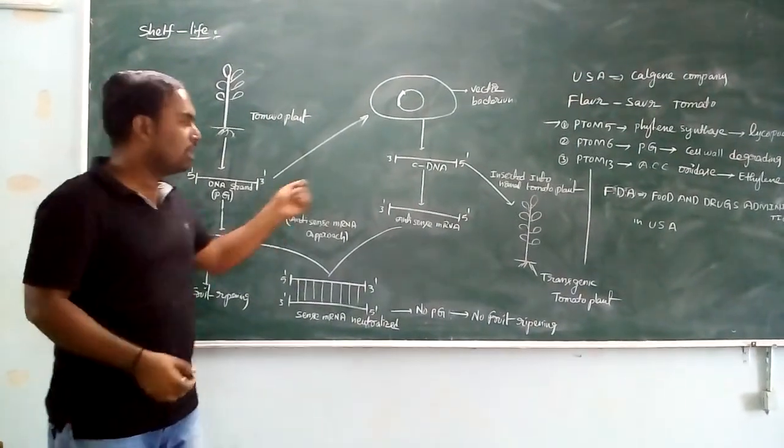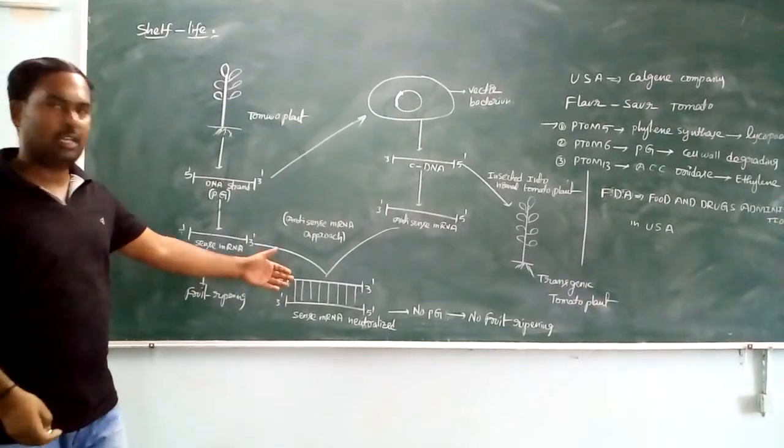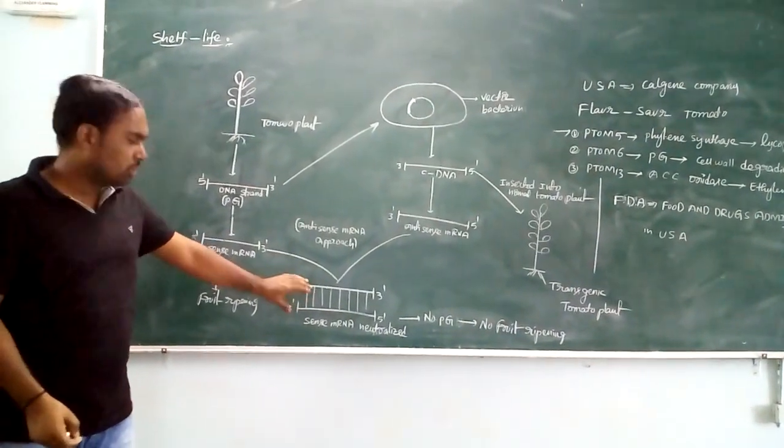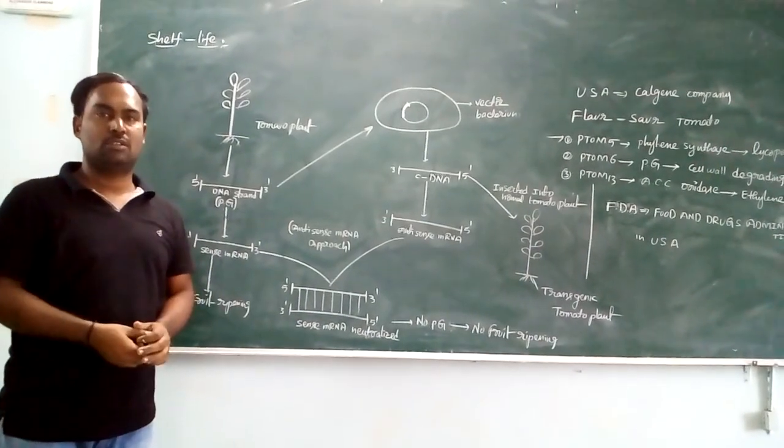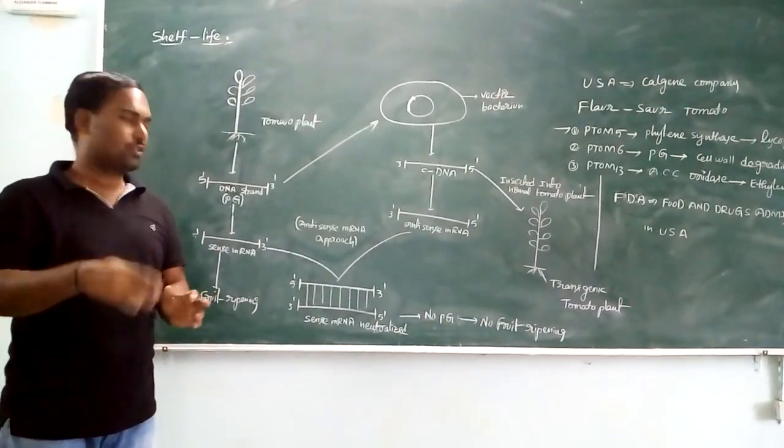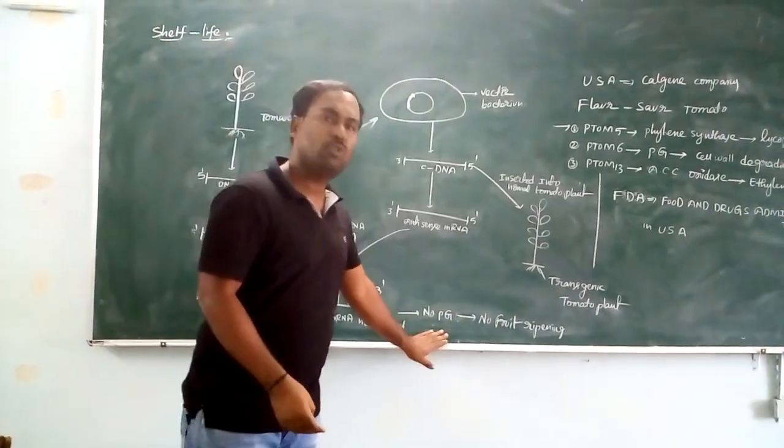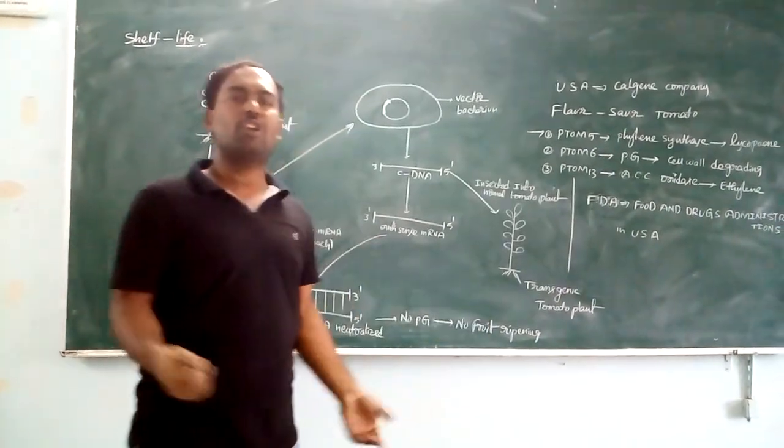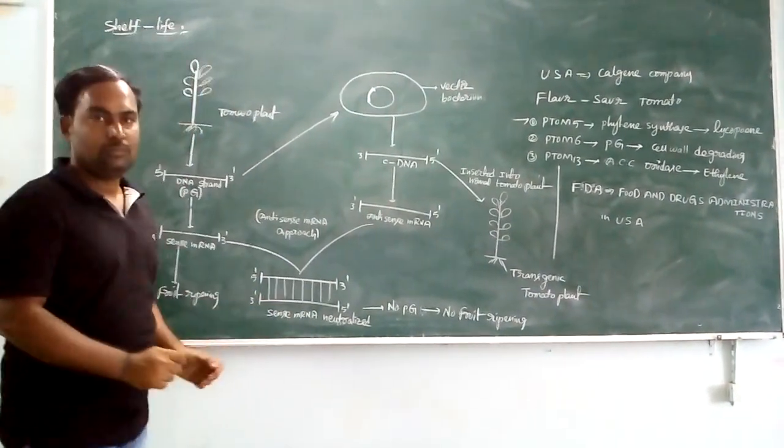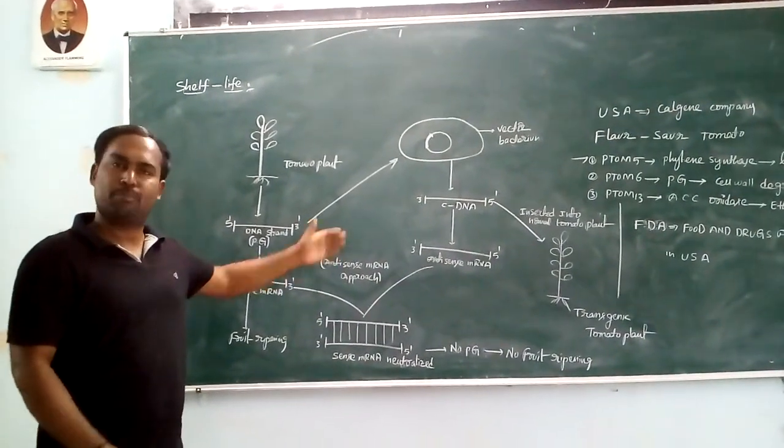This sense mRNA and antisense mRNA both fuse to form another DNA strand. This means the sense mRNA is neutralized, so it is ineffective. That's why this DNA strand does not code for any PG. No Polygalacturonase, then automatically no fruit ripening. It is an antisense mRNA approach.